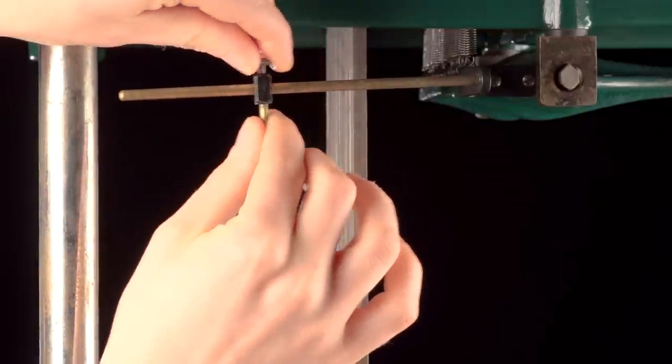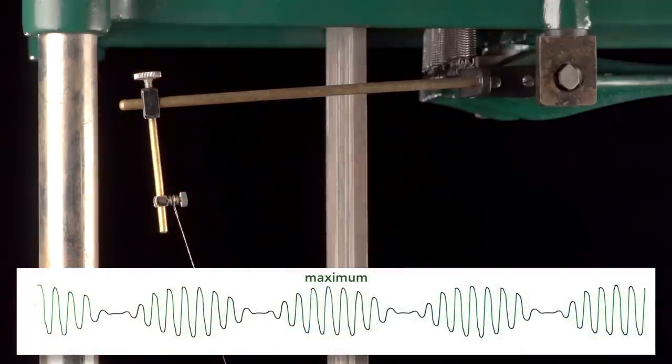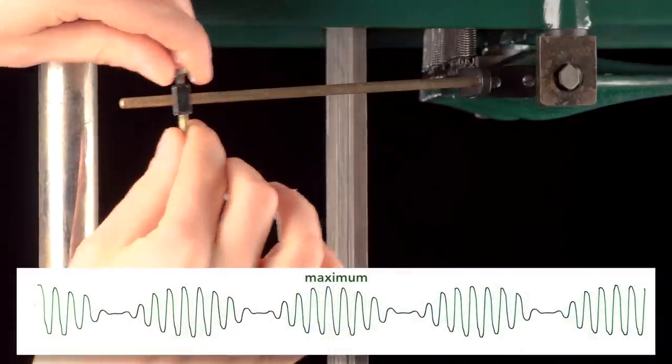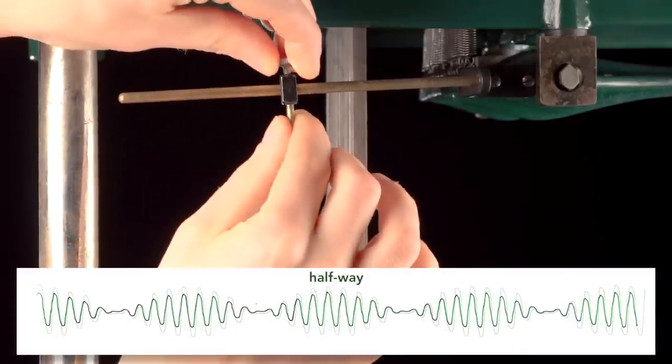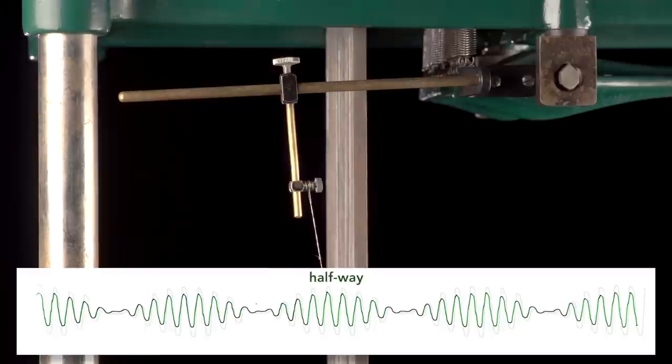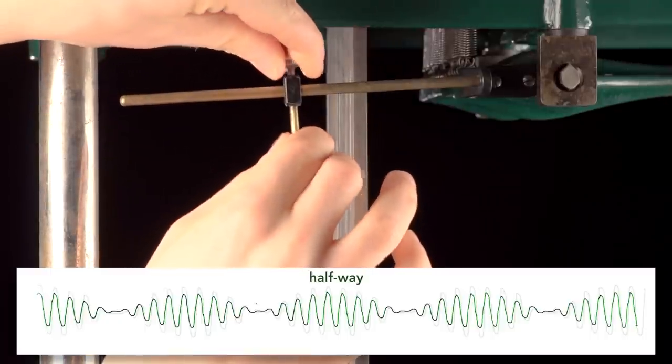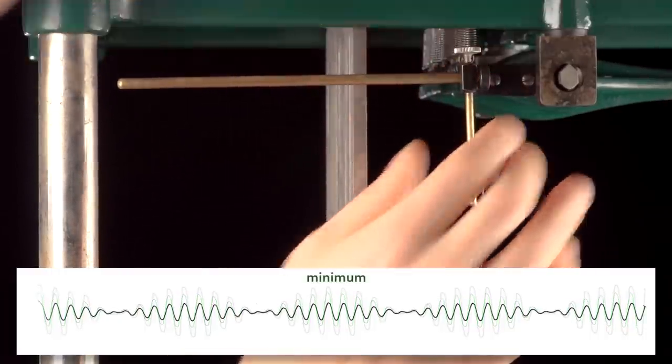When the knob is toward the end, the amplitude is at a maximum. When the knob is about halfway, the amplitude is reduced. And when I place it all the way inward, the amplitude is at a minimum.